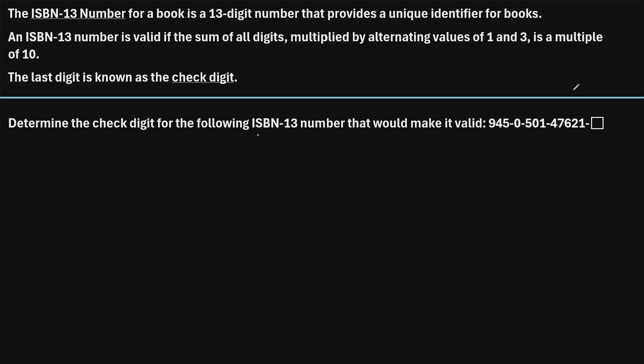This says, determine the check digit for the following ISBN 13 number that would make it valid. So we're given the first 12 digits of some ISBN 13 number. We want to know what does the last digit need to be in order for this number to be valid. So let's go ahead and rewrite the number right here.